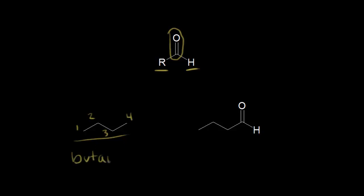If we look at a four-carbon aldehyde over here on the right, when you number an aldehyde, you want to make your carbonyl carbon number one — so one, two, three, and four. We have a four-carbon aldehyde, and what we're going to do is drop the E and add AL for aldehyde, so this would be butanal. A four-carbon aldehyde is butanal with an AL ending.